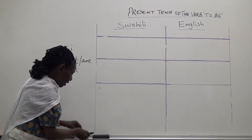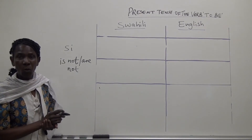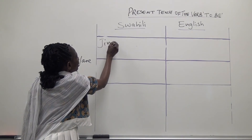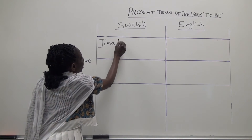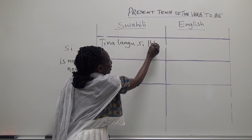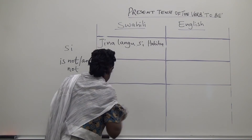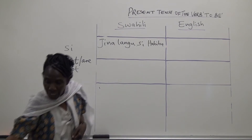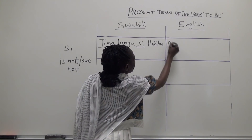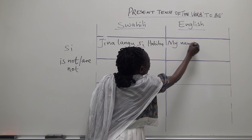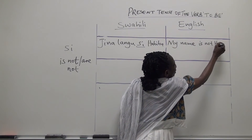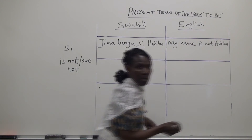So for example, the sentence we had earlier was 'Jina langu ni Habiba', but this time it would be: 'Jina langu si Habiba.' And the English translation of this sentence would be: my name is not Habiba.